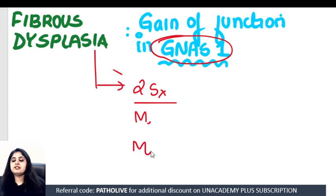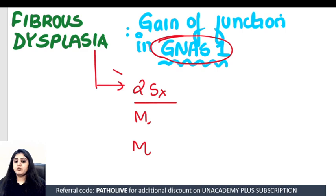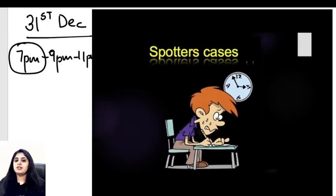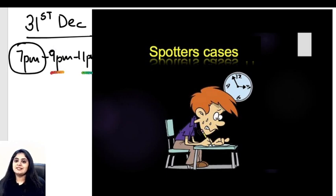There are two syndromes, and I'll give you the biggest hint — both syndromes start with M. They both show GNAS mutation and both show fibrous dysplasia. Comment in the comment section below and let me know, so I can see that you've been studying well. That wraps up the first spotter of the day. See you again at 9 o'clock and at 11 o'clock where we'll discuss the others.